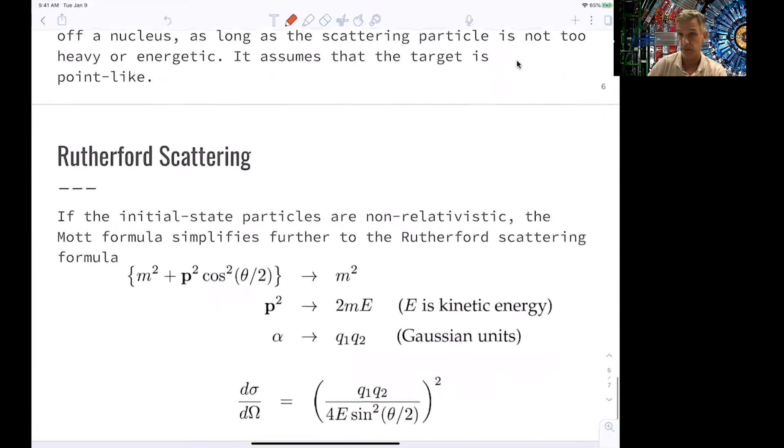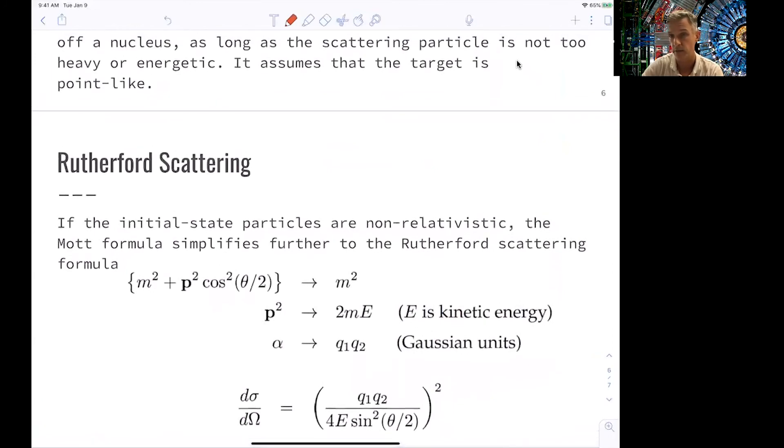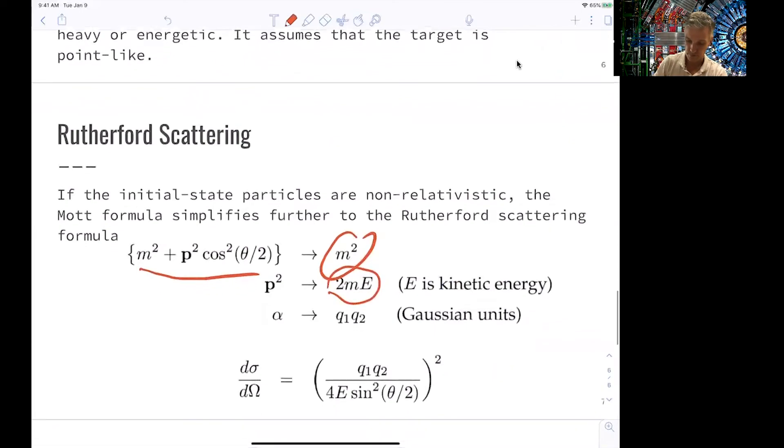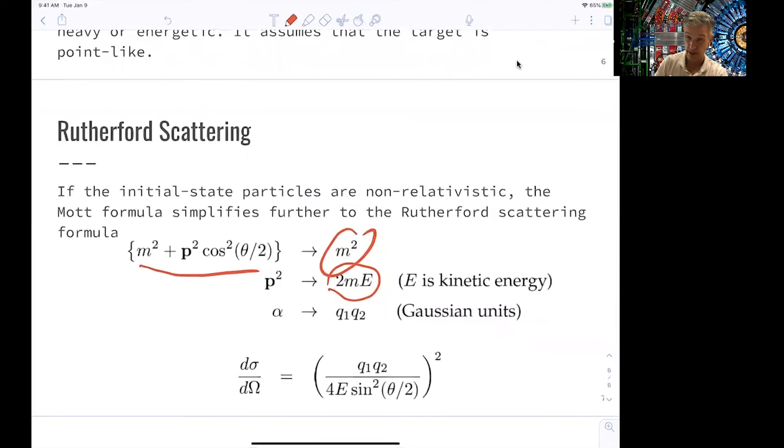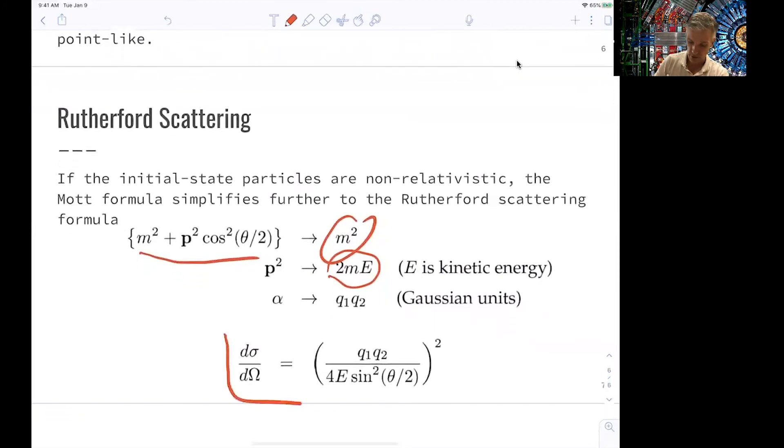We can further discuss now the case where the initial state particles are non-relativistic. So here, our momentum formulas simplify. This is simply m squared, p squared is 2me, and alpha is q1 times q2. Those are the electric charges. And so then our differential cross-section further simplifies to something you have already seen.